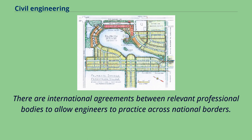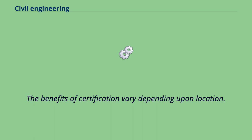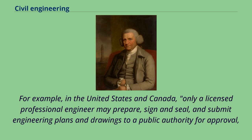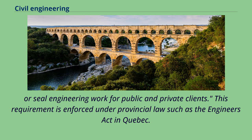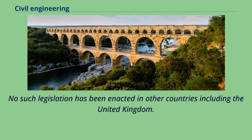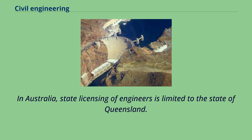There are international agreements between relevant professional bodies to allow engineers to practice across national borders. The benefits of certification vary depending upon location. For example, in the United States and Canada, only a licensed professional engineer may prepare, sign and seal, and submit engineering plans and drawings to a public authority for approval, or seal engineering work for public and private clients. This requirement is enforced under provincial law such as the Engineers Act in Quebec. No such legislation has been enacted in other countries including the United Kingdom. In Australia, state licensing of engineers is limited to the state of Queensland.